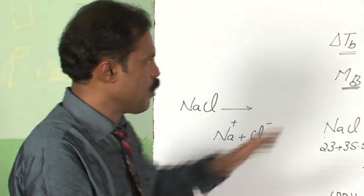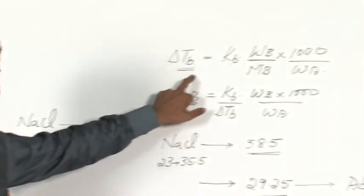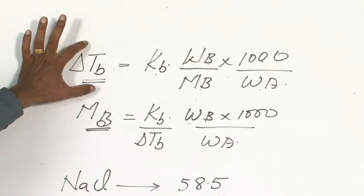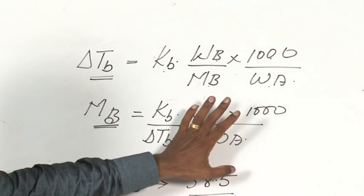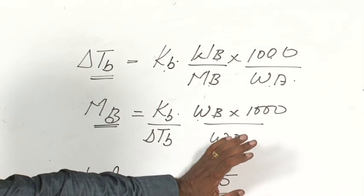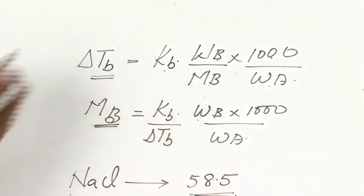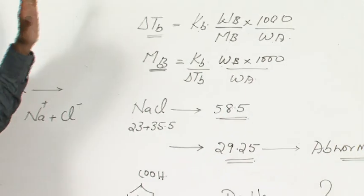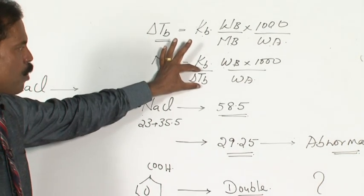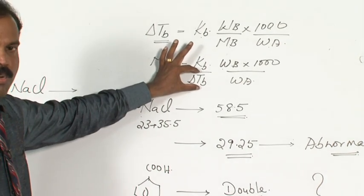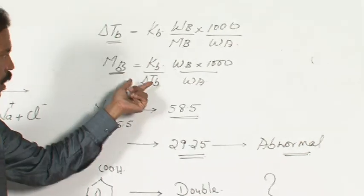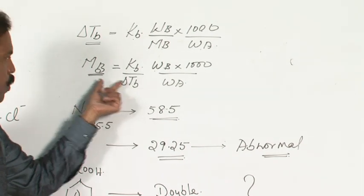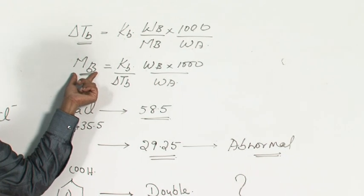We are trying to find out molecular weight of a substance using a colligative property. A colligative property depends on the number of particles, not on the nature of particles. When the number of particles gets doubled, as seen from the graph, the colligative property also gets doubled. When delta Tb gets doubled, obviously the molecular weight should get halved.